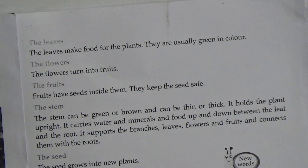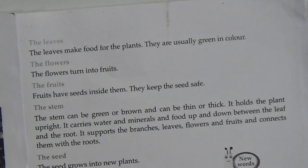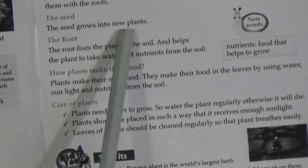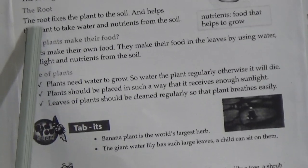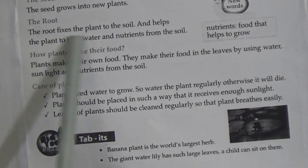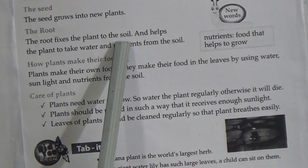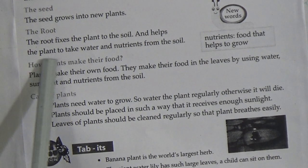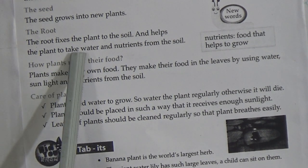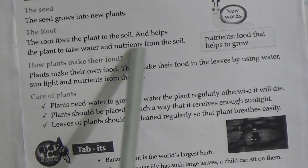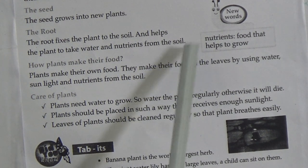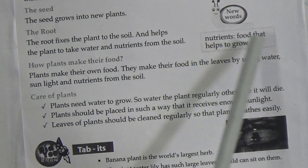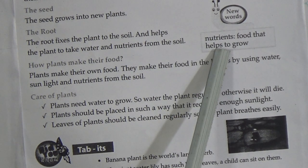The stem supports the branches, leaves, flowers, and fruits, and connects them with the roots. The seed grows into new plants. The root fixes the plant to the soil and helps the plant take water and nutrients from the soil. The meaning of nutrients is: nutrients are food that helps plants to grow.